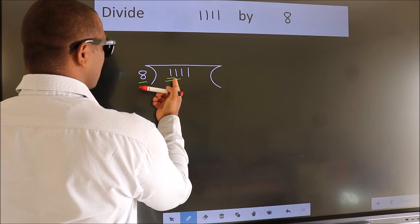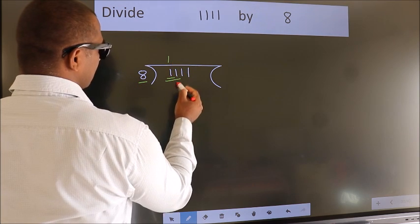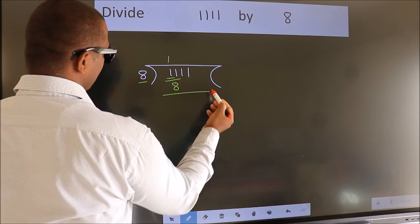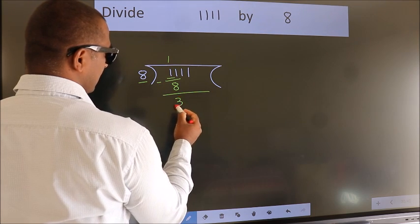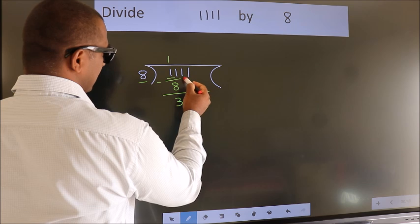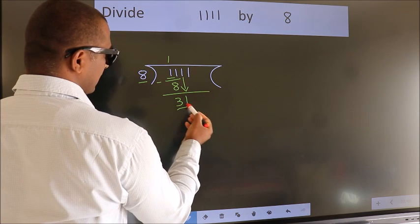A number close to 11 in the 8 table is 8 once, 8. Now, we should subtract. We get 3. After this, bring down the next number. So, 1 down. So, 31.